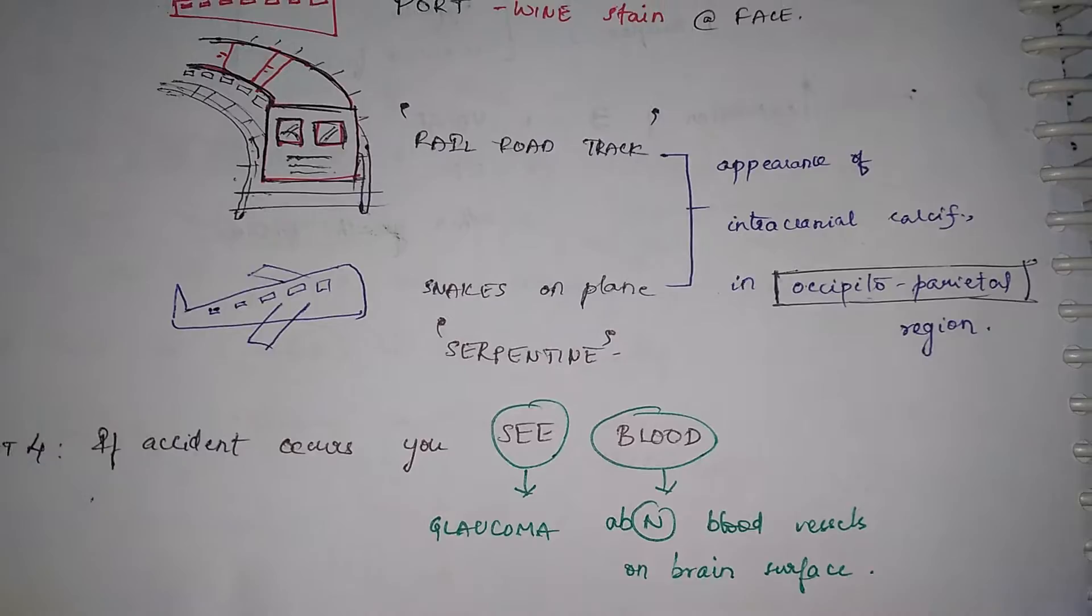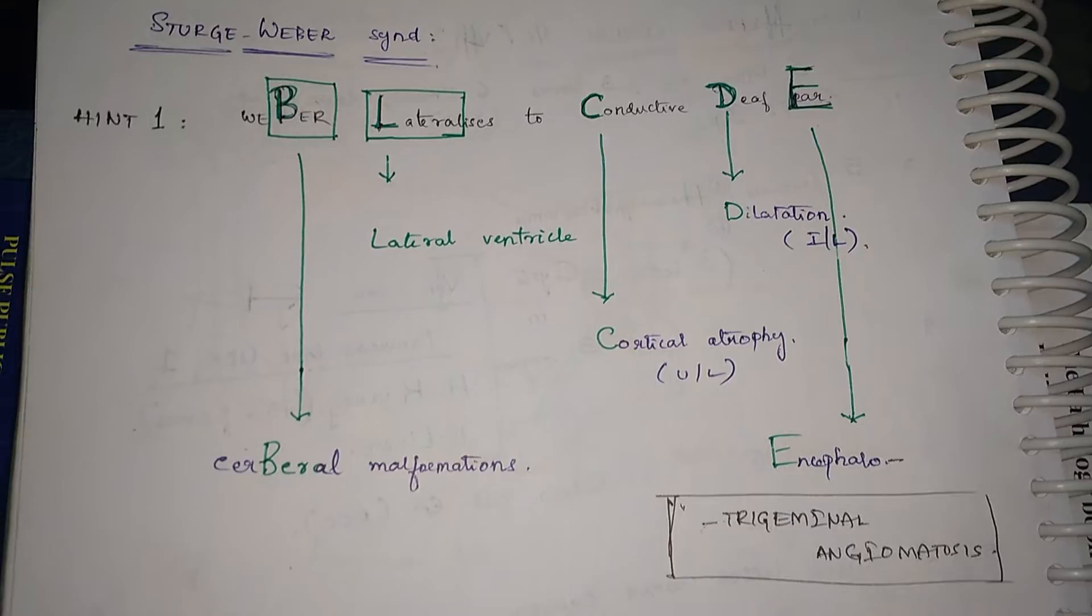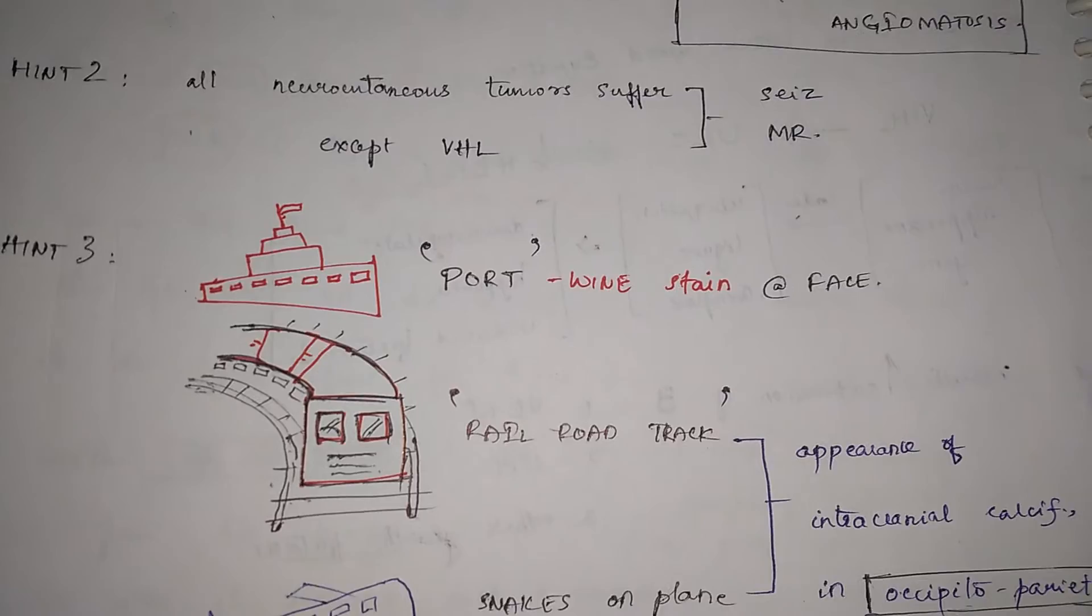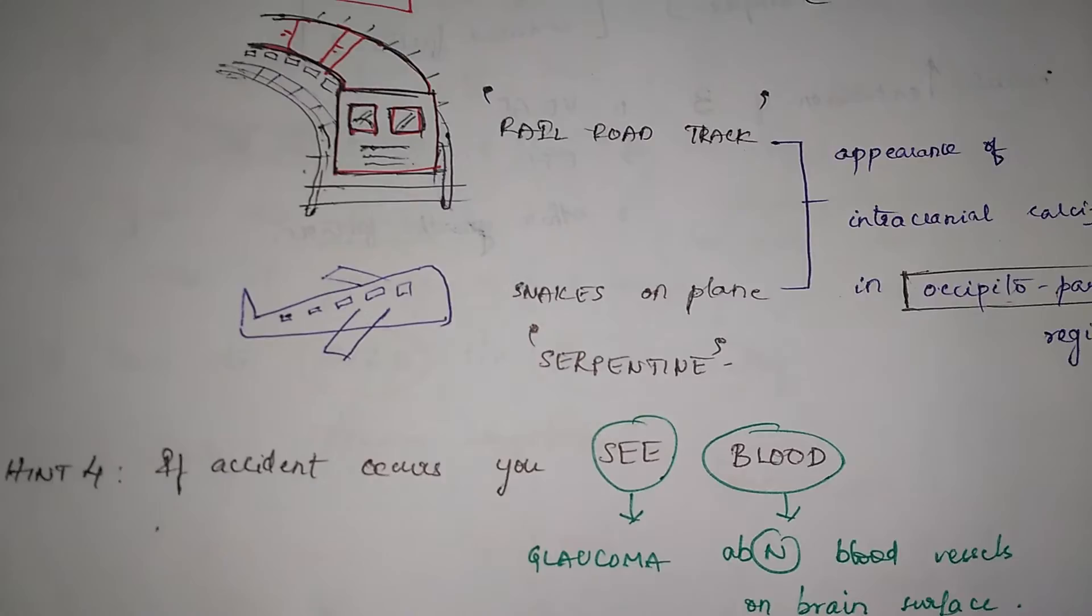So these are our four hints that is Weber lateralizes to conduct to deaf ear hint two is a generalized statement hint three is three communication methods the three transport methods four is if the accident occurs you see blood.